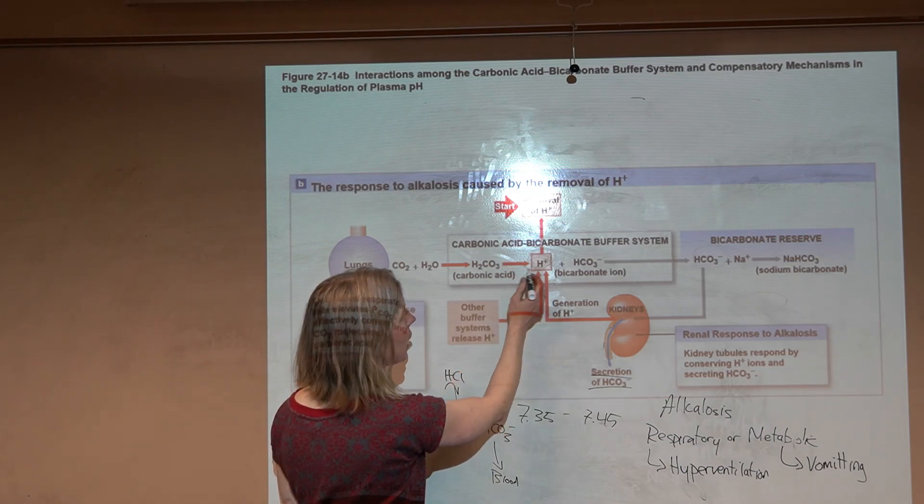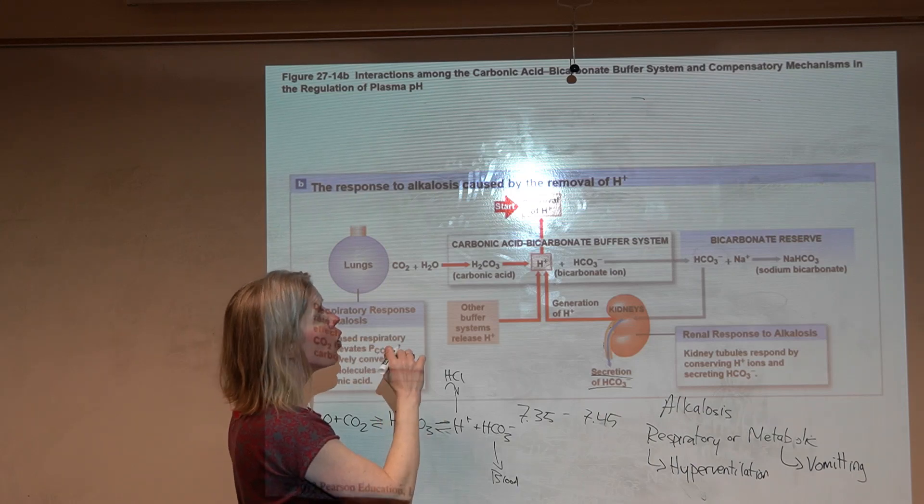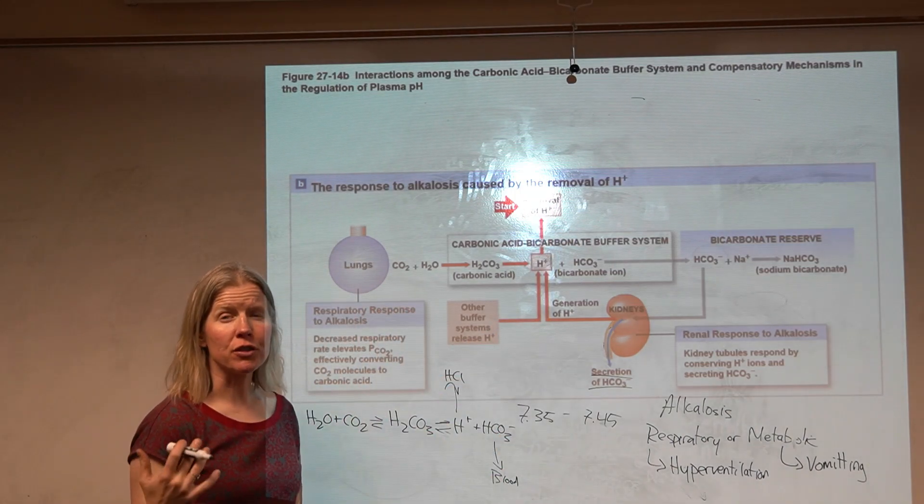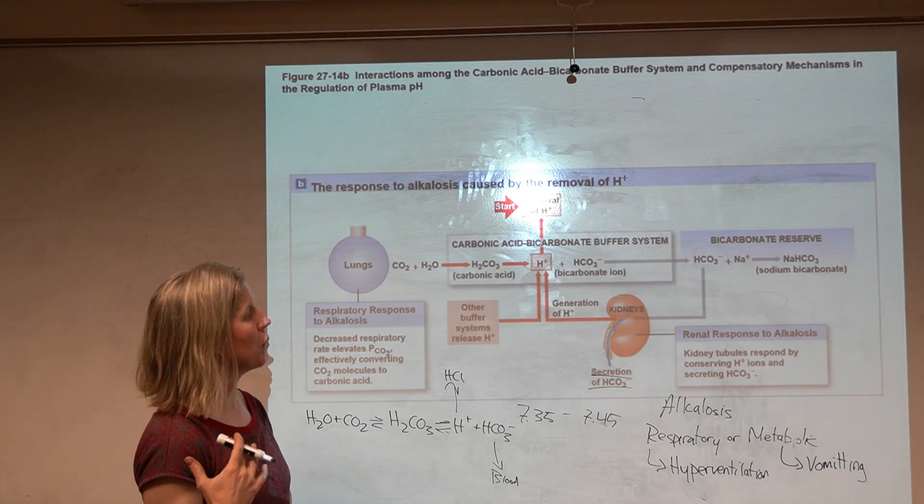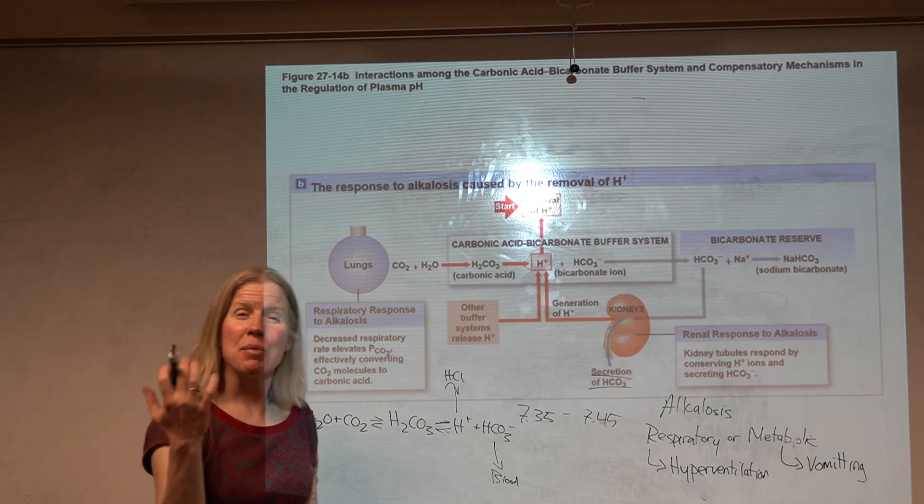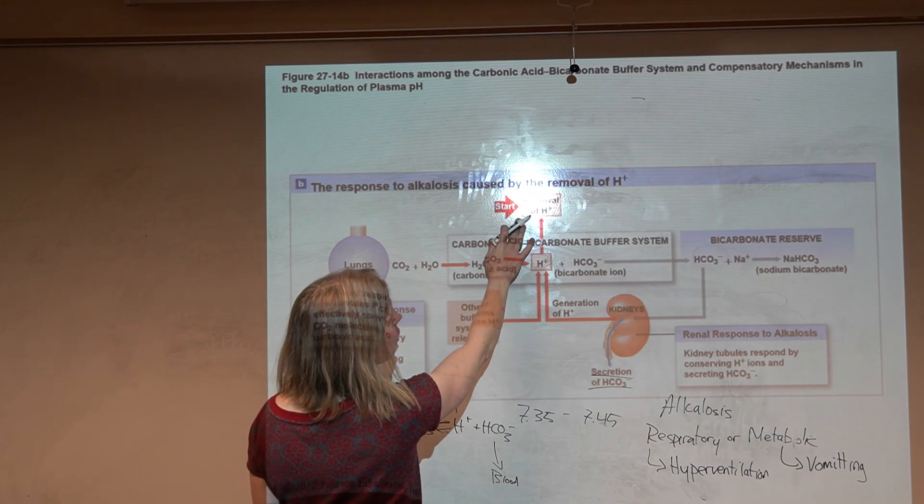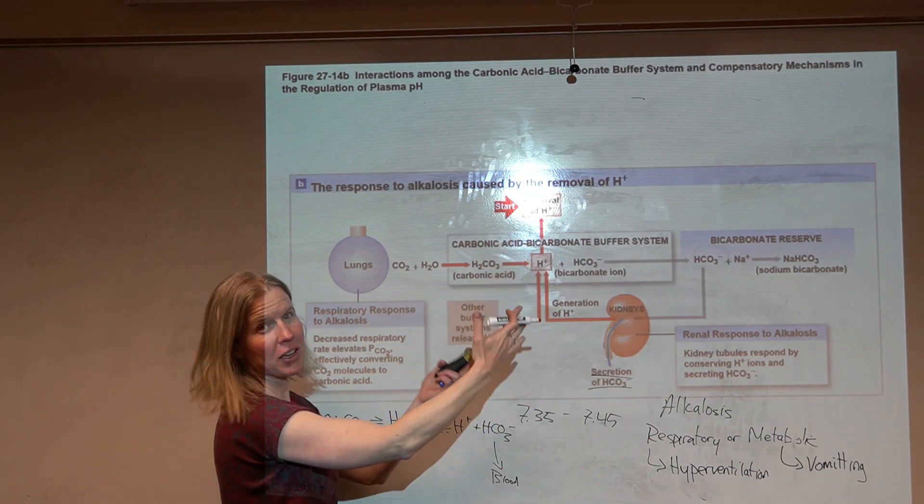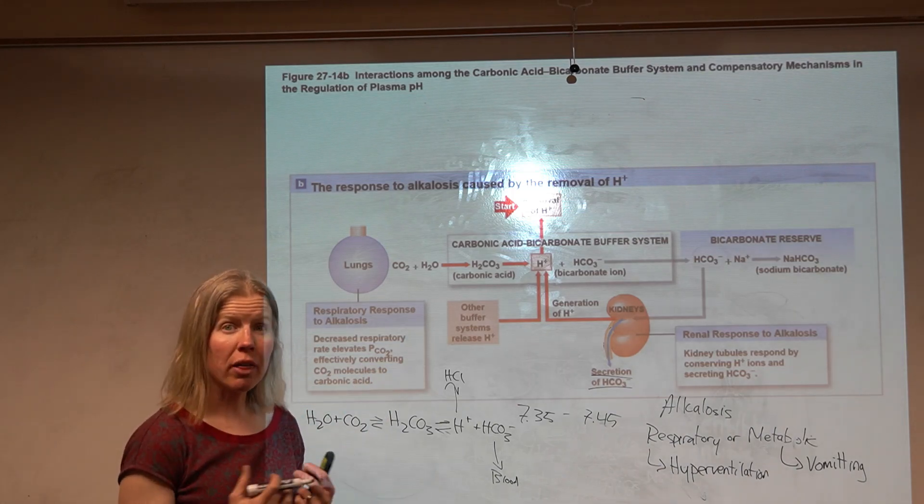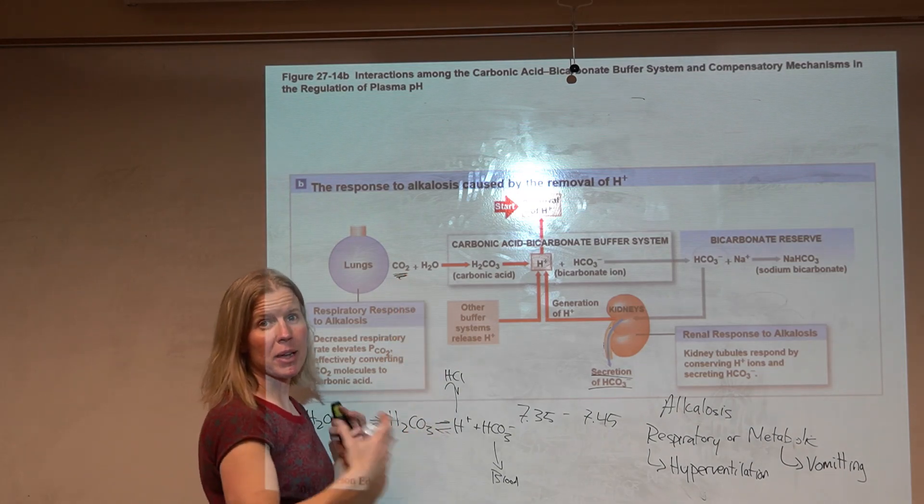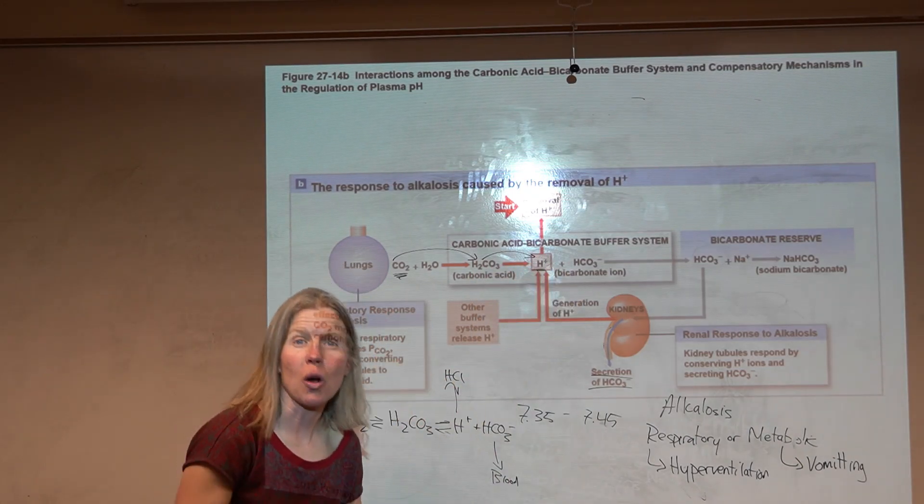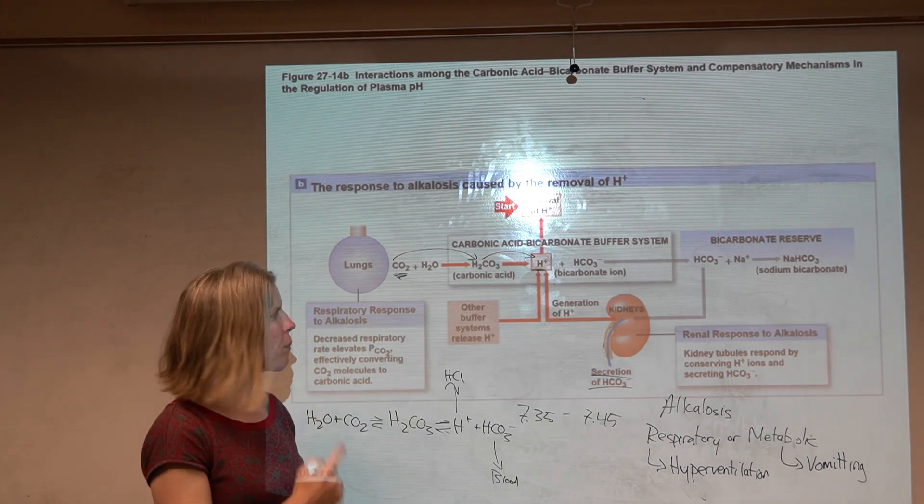In metabolic alkalosis, we're removing that hydrogen. We have low levels of hydrogen and that's why we have such a high pH. pH is confusing, it's okay if you have to stop and think or write it out. In alkalosis we're removing all this hydrogen. Let's go with the vomiting example. The lung says, okay, I know what to do. If I lower the respiratory rate, if I hold my breath, that CO2 will build up. As I build up CO2, I can make more carbonic acid which will then dissociate and give us hydrogen to lower the pH.